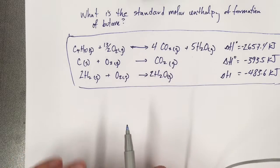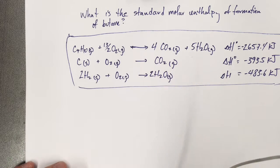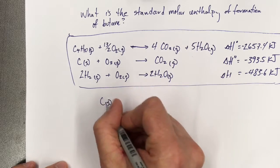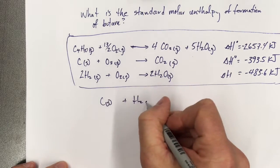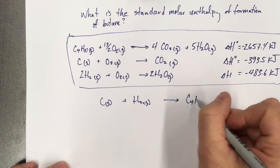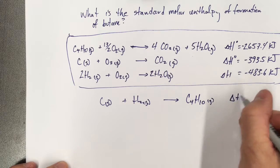And typically they only give you the information you need to be able to calculate it. So the enthalpy of formation of butane would be carbon and hydrogen gas are going to form butane, C4H10, and it's a gas. And we want to know its enthalpy.